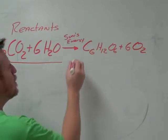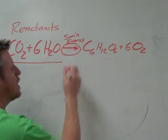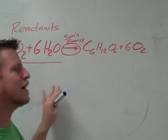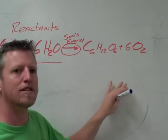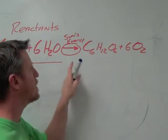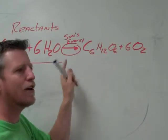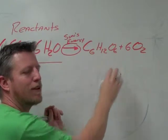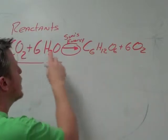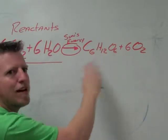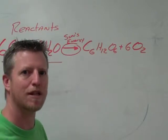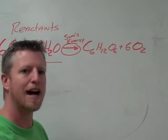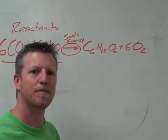Now, remember the arrow sign means yields. It basically says when these guys get together, they're going to yield or make something new. And so what's happening here is this arrow is like an equal sign in math. These items equal this substance here. Now, if you notice, nothing is written the same. We have the same letters being used representing the atoms in the molecules, but they're reattaching themselves like the labs we've been doing in class.